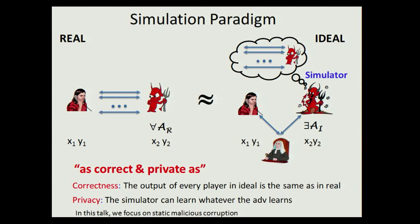In this talk, I'm going to focus on a specific type of adversary who always performs static malicious corruption. Traditionally, the multi-party computation problem is considered in a standalone setting.